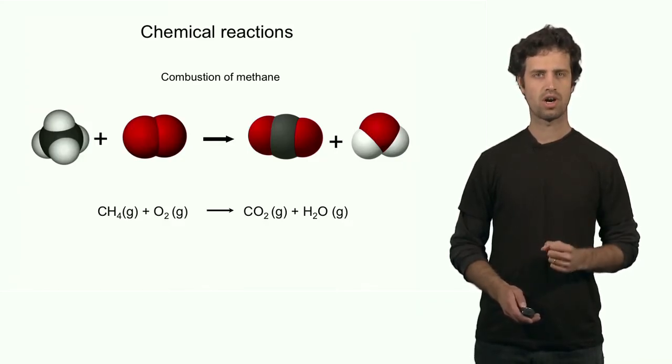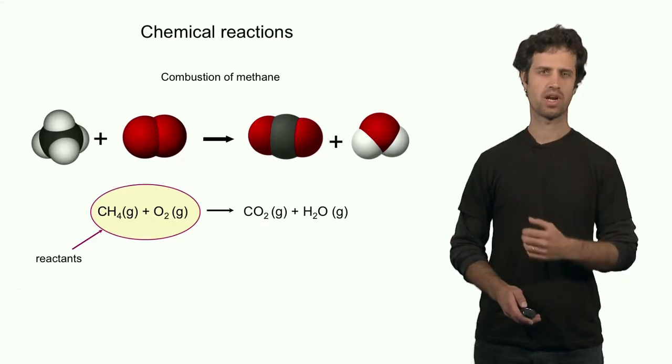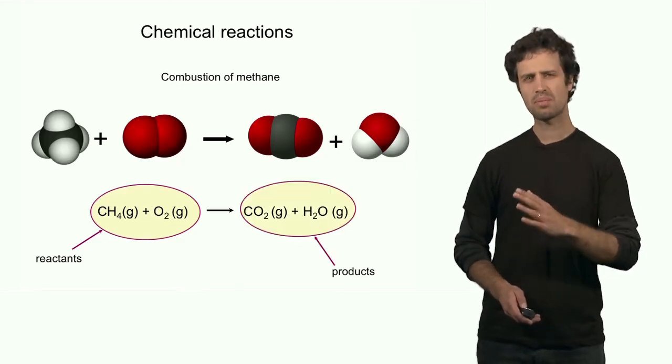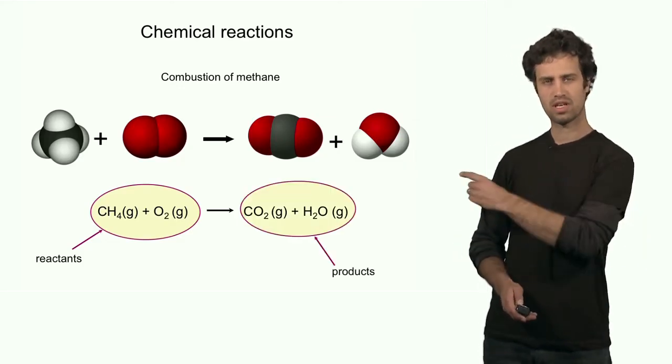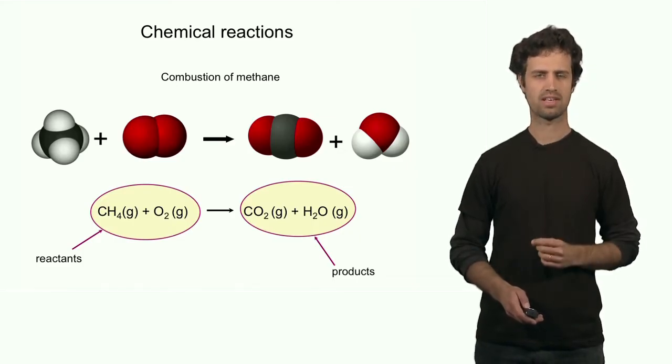The products are CO2 and H2O. So on the left, we see the reactants, and on the right, we see the products. Now, something is not quite right with the way it's written here. Because if I look carefully at the number of hydrogen atoms, represented by the white spheres,